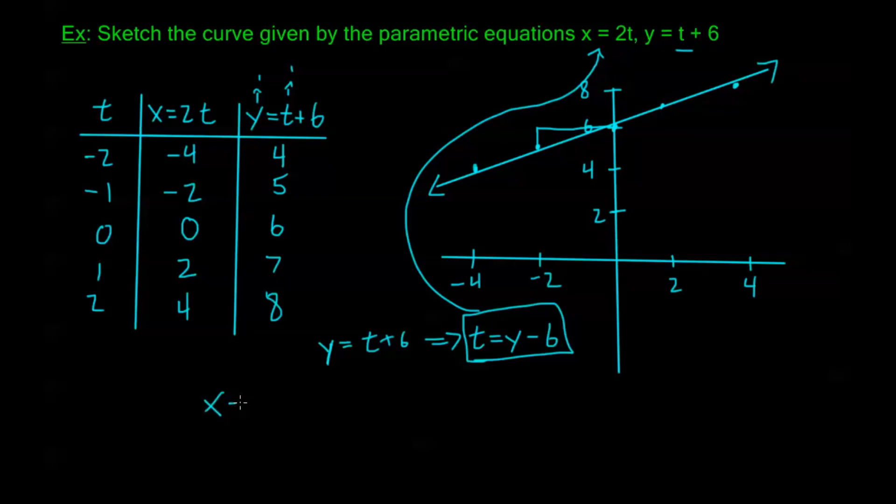Now x equals 2t, and we just found that t is y minus 6. So this is going to be 2y minus 12. Now let's go ahead and get y on the other side. Let's switch these places of y and x. I have 2y equals x minus 12. And from here, dividing both sides by 2, I get y equals 1 half x minus 6.